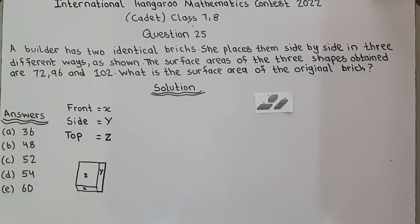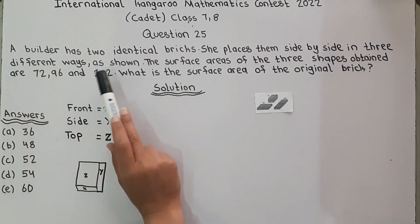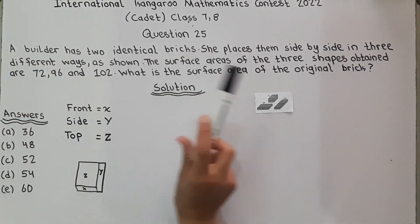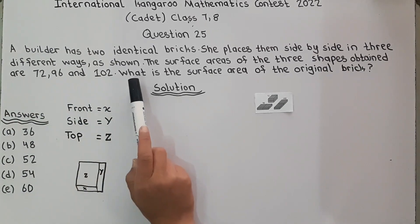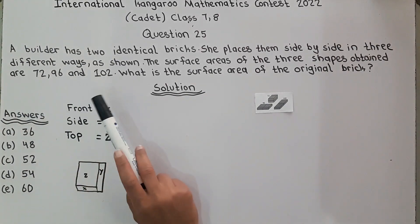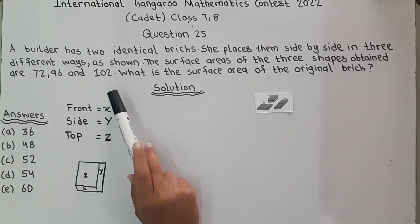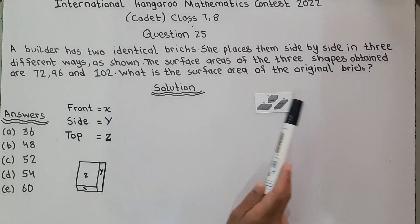Hello everyone, I am Usain and I am back with another video on IEKMC International Can Do Mathematics Contest 2022, Credit Level Class 7-8. Question number 25: A builder has two identical bricks. She places them side by side in three different ways as shown. The surface area of the three shapes obtained are 72, 96, and 102. What is the surface area of the original brick?